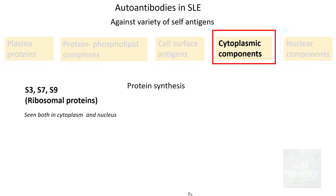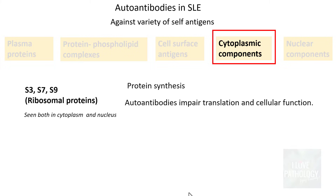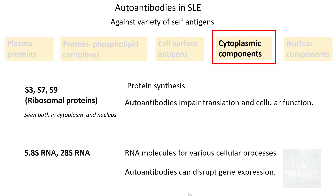Other cytoplasmic targets include ribosomal proteins S3, S7, and S9 — which can be found in both cytoplasm and nucleus — involved in protein synthesis; autoantibodies against these impair translation and cellular function. Finally, RNA molecules such as 5.8S RNA, used in various cellular processes; autoantibodies against these RNA molecules can disrupt gene expression.